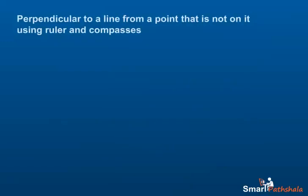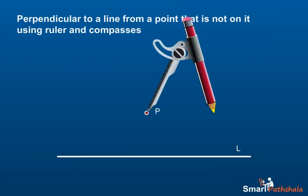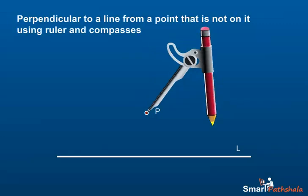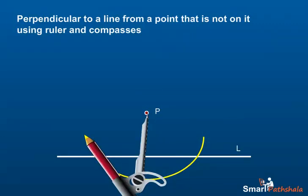Let us now use the second method to draw the line segment. Step 1: Draw a line L. Step 2: Mark a point P outside L. Step 3: From P, construct an arc that intersects the line in at least two locations.